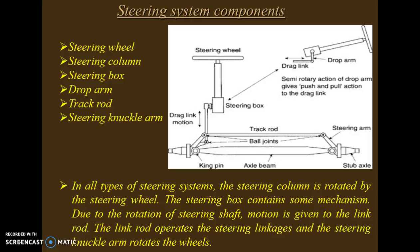The main components of the steering system are the steering wheel, steering column, steering box, drop arm, track rod, and steering knuckle arm. In all types of steering systems, the steering column is rotated by the steering wheel. The steering box contains a mechanism where, due to the rotation of the steering shaft, motion is given to the link rod, which operates the steering linkage, and the steering knuckle arm rotates the wheel.